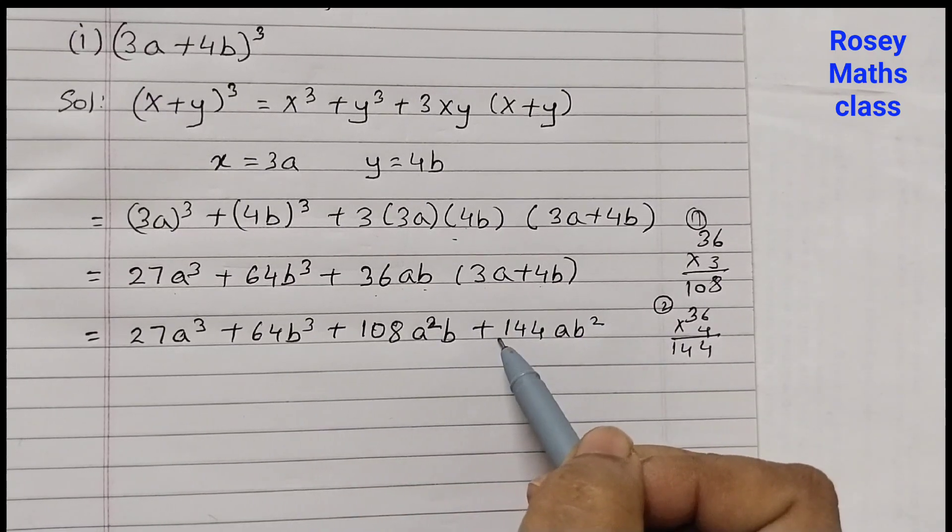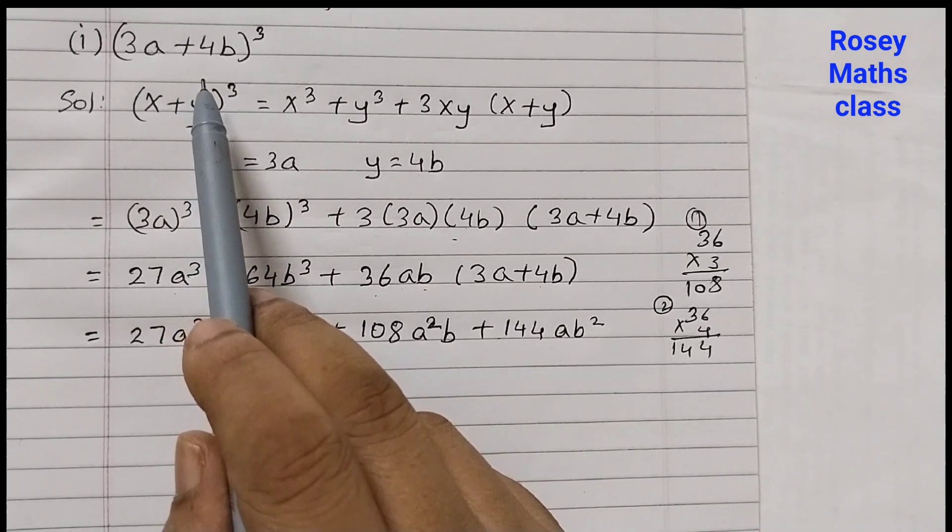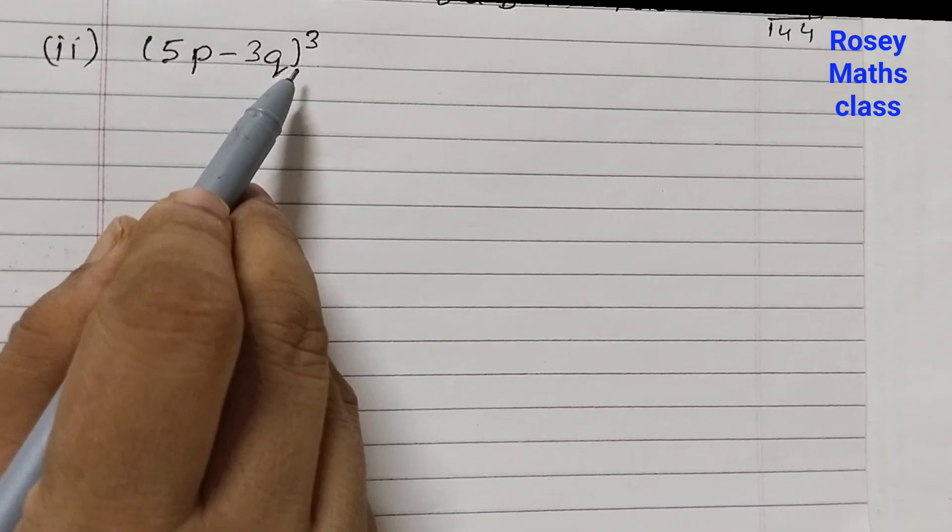So this is the expanded form of the given expression. Second one: (5p - 3q)³.